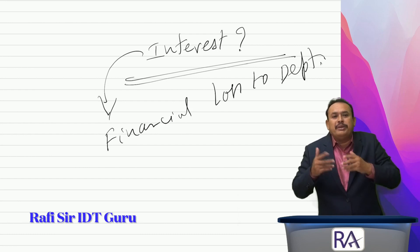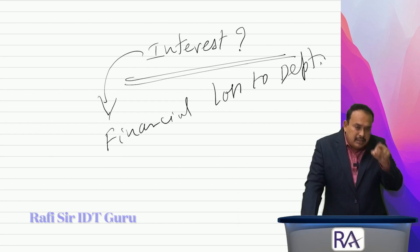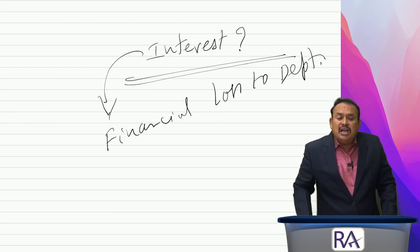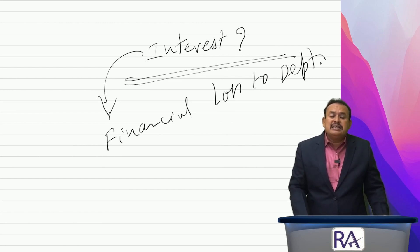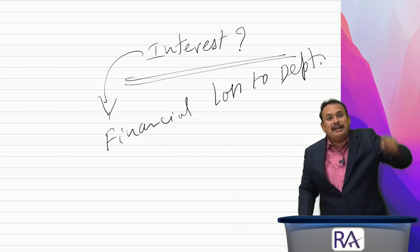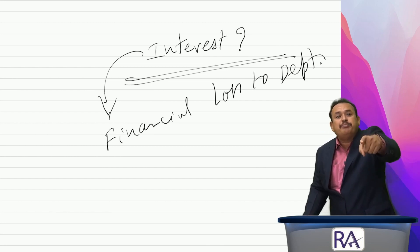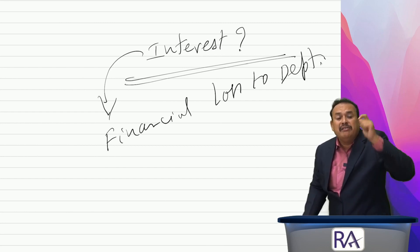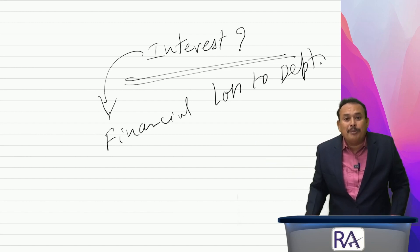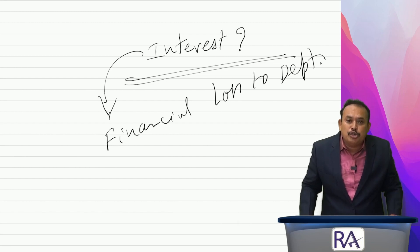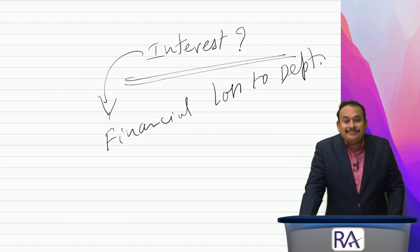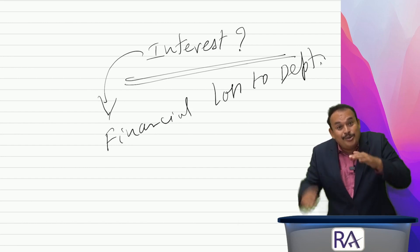When that show cause notice is issued and I come forward to pay, the gross liability attracts interest and input tax credit is not allowed to be adjusted. This is the situation of reassessment — where self-assessment is not taking place and payment is made under Section 74, meaning the department noticed the non-payment on account of fraud or suppression of facts. In such cases, the department issues a Section 74 notice for non-payment due to fraudulent activity, and when making payment, input tax credit cannot be adjusted.